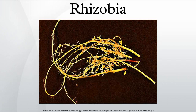Rhizobia are soil bacteria that fix nitrogen after becoming established inside root nodules of legumes. Rhizobia require a plant host — they cannot independently fix nitrogen. In general, they are gram-negative, motile, non-sporulating rods.